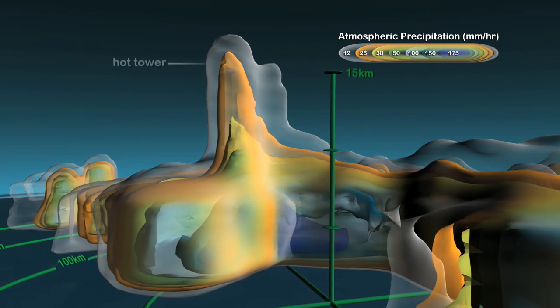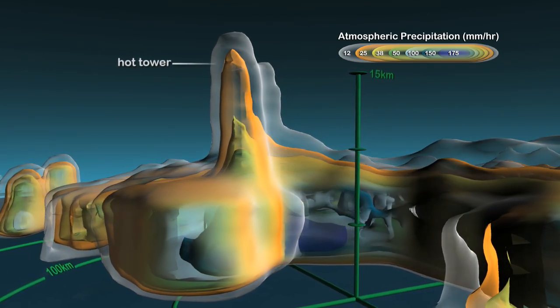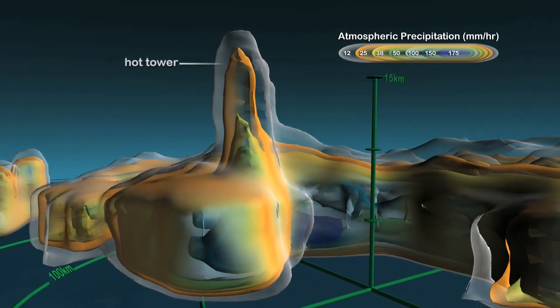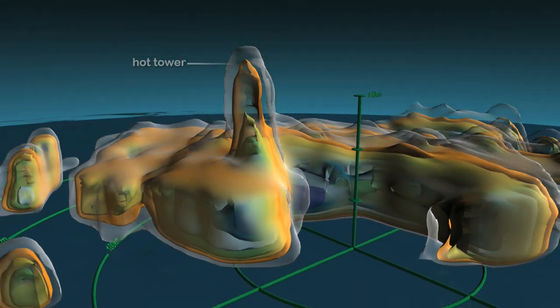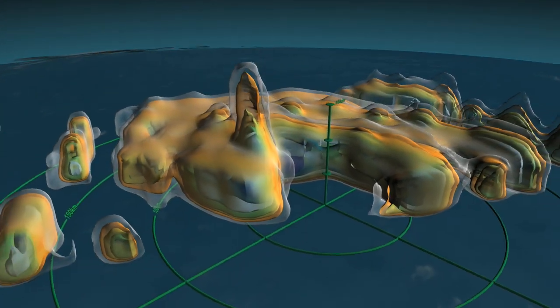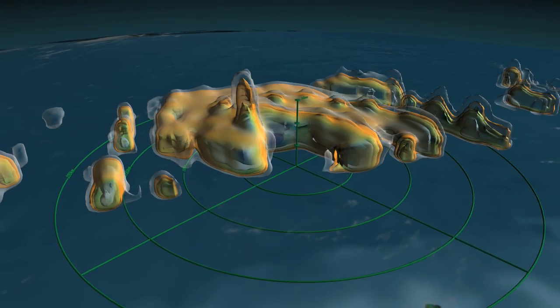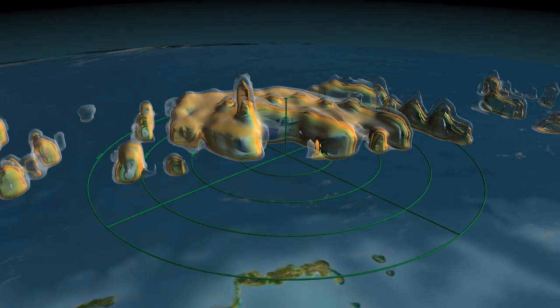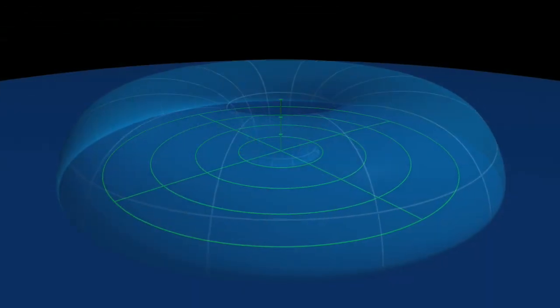These structures, called hot towers, extended higher than commercial jets fly. Research into these observations has led scientists to new insights about hurricanes. Let's look at the role hot towers play in hurricanes.